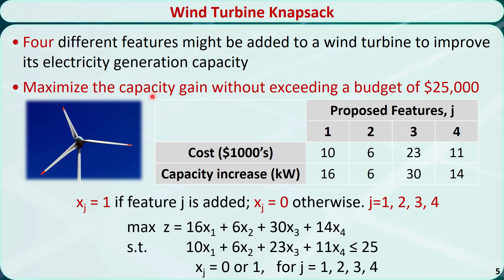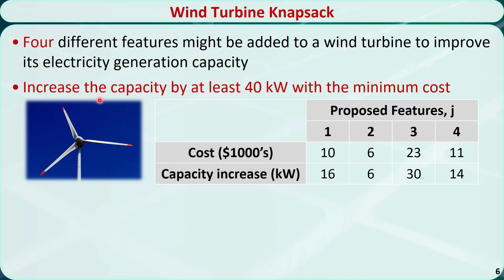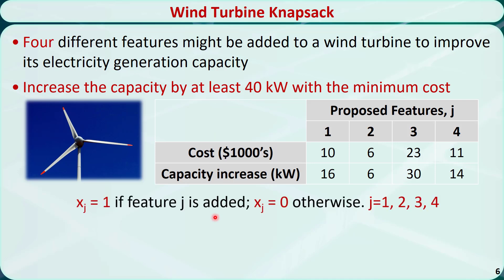Now suppose the requirement is changed. We want to increase the capacity by at least 40 kW, and we want to minimize the total cost. To formulate this problem, the variables are still the same.